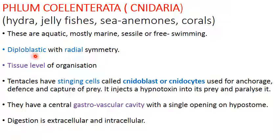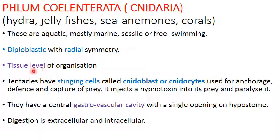Cnidarians are diploblastic — they have two germ layers. Their symmetry is radial — the body is like a cylinder that can be divided by more than one plane passing through the center from top to bottom. Unlike Porifera which had cellular level of organization, the cells in cnidarians are organized into tissues — they show tissue level of organization. A characteristic feature is the presence of stinging cells called nematoblasts or nematocytes on their tentacles.